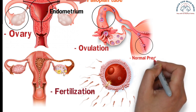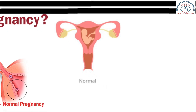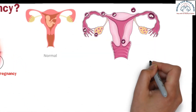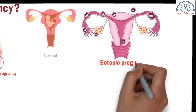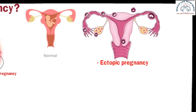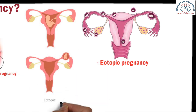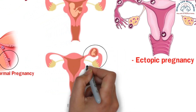This is how a normal pregnancy occurs, and this is where the baby grows. However, if for some reason the embryo does not implant in the uterus and settles elsewhere in the reproductive system, this is known as an ectopic pregnancy — when the embryo remains outside the uterus. Most ectopic pregnancies occur in the fallopian tube or the ovary.